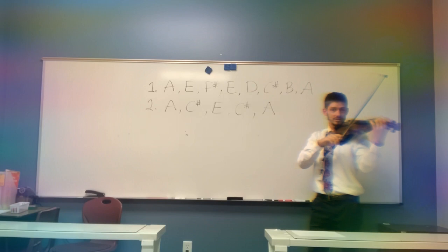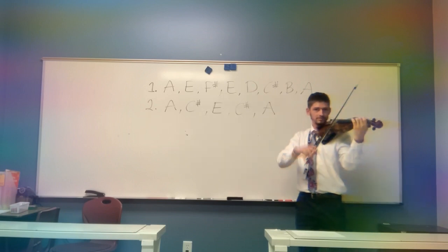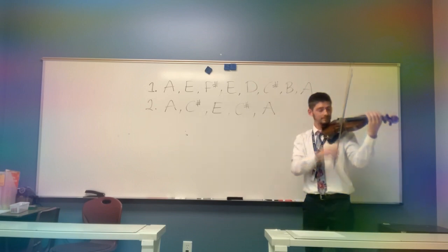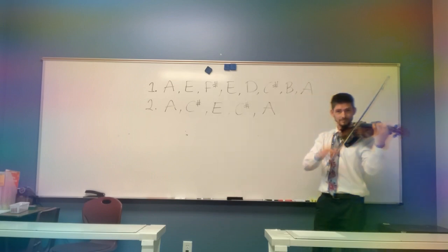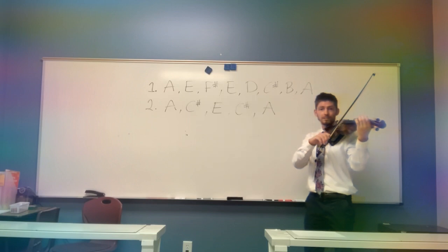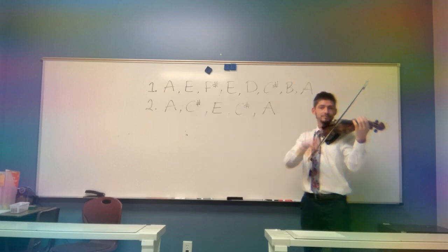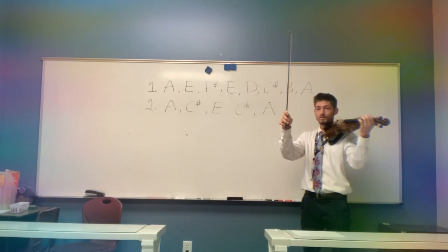Second finger, C sharp. Elbow down, E string. C sharp. Ready? Play. Open A. Ready? Play. Good. Check your bow hold. Bumpy thumb, curly pinky.